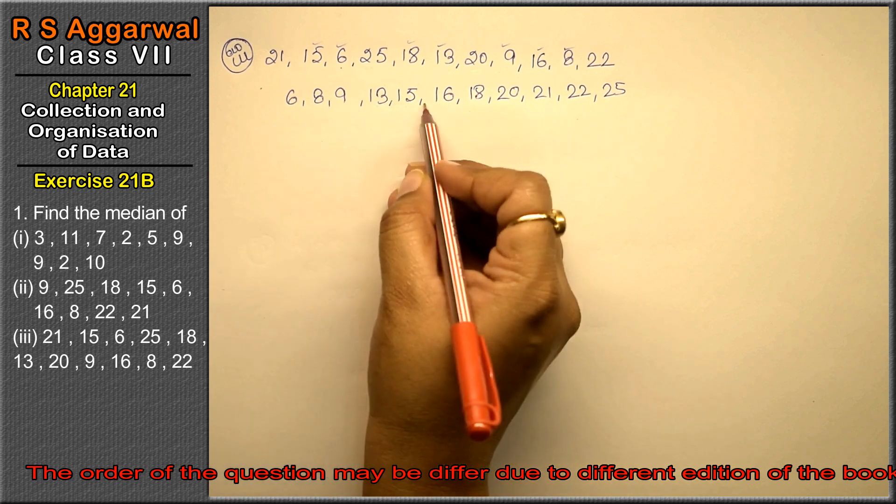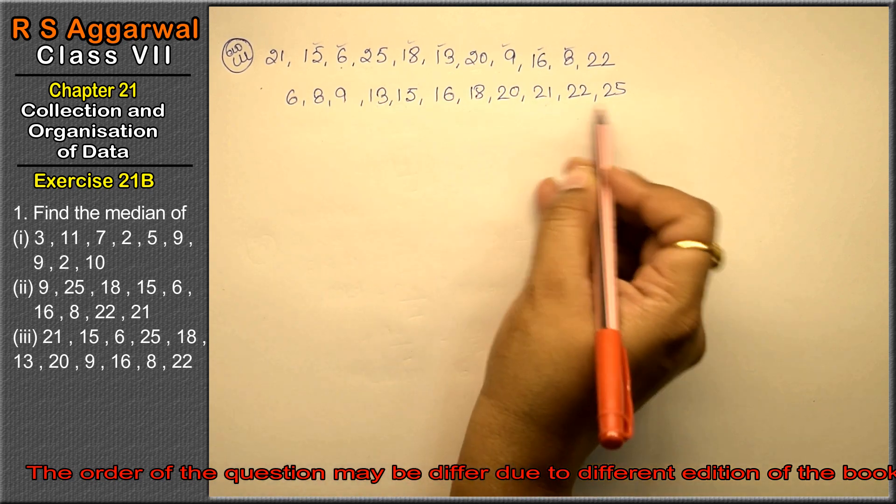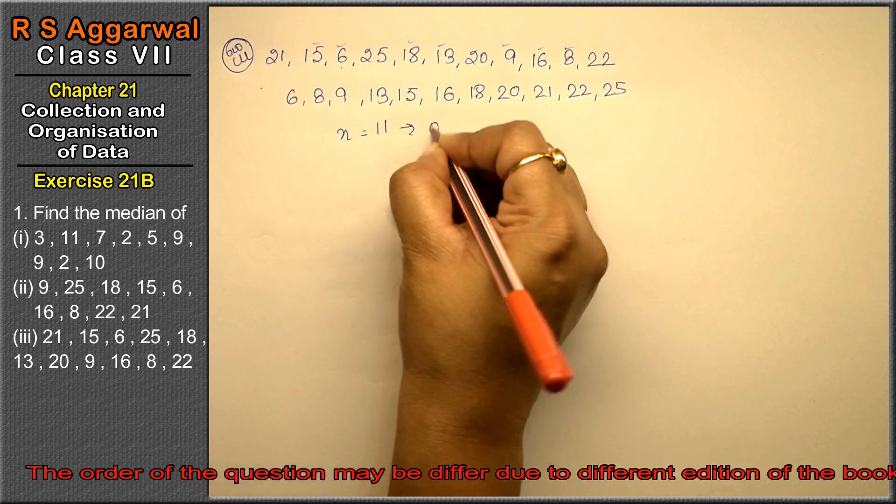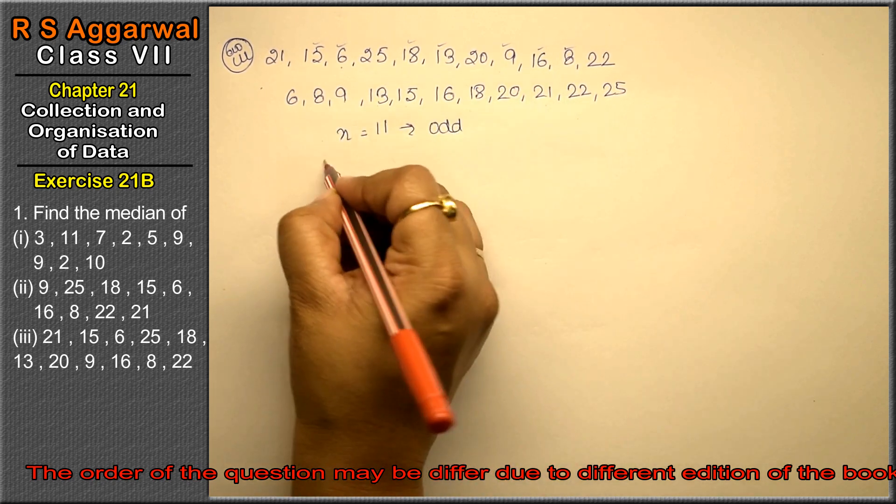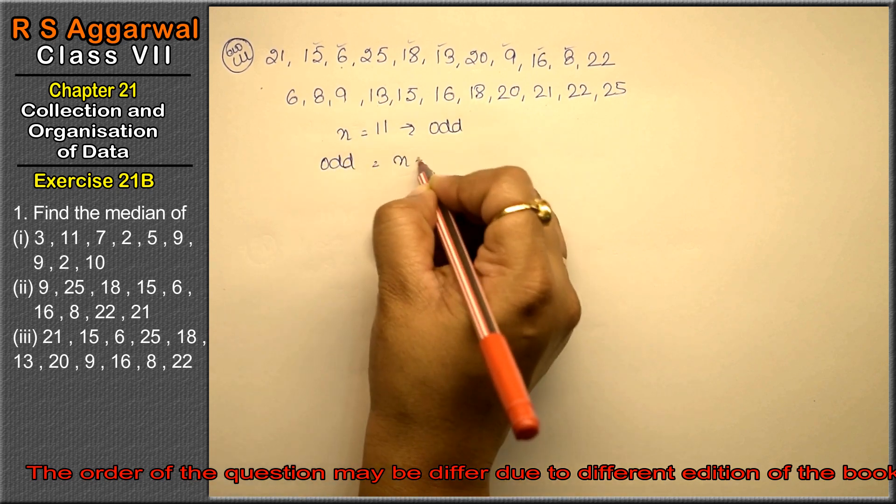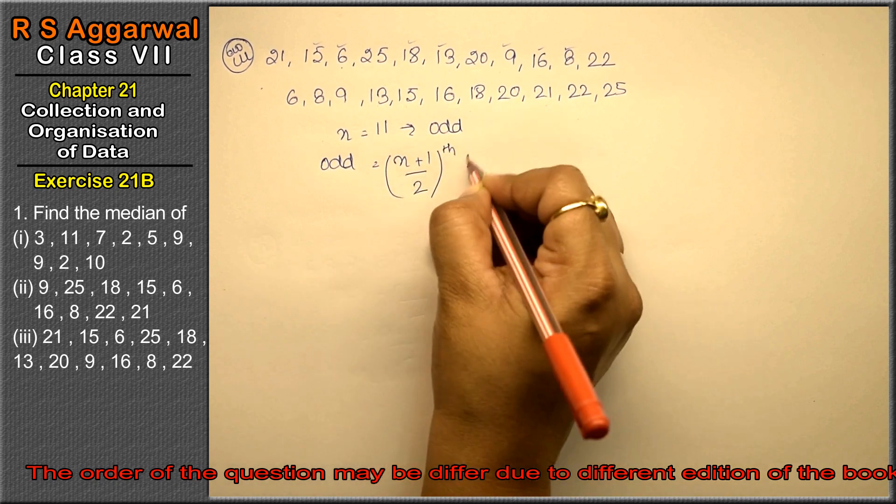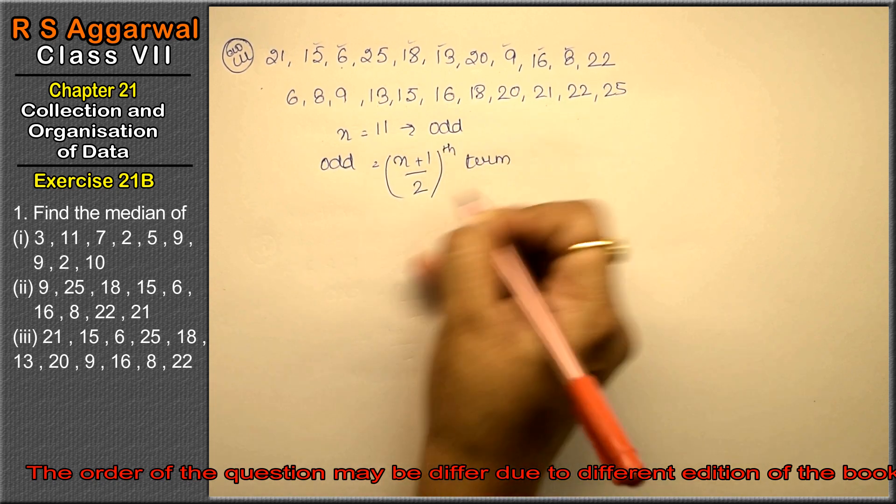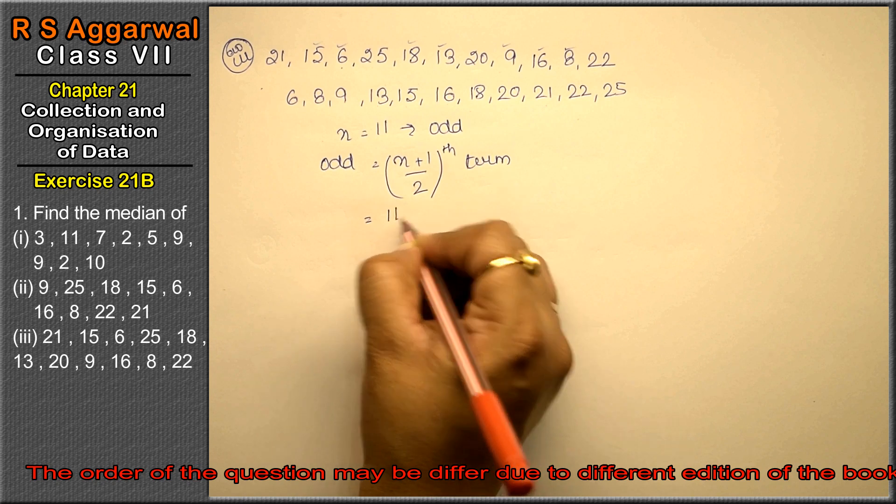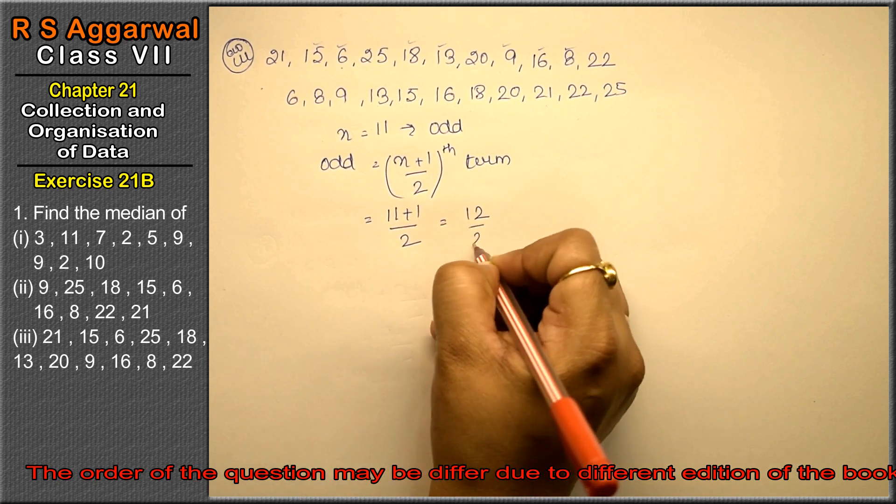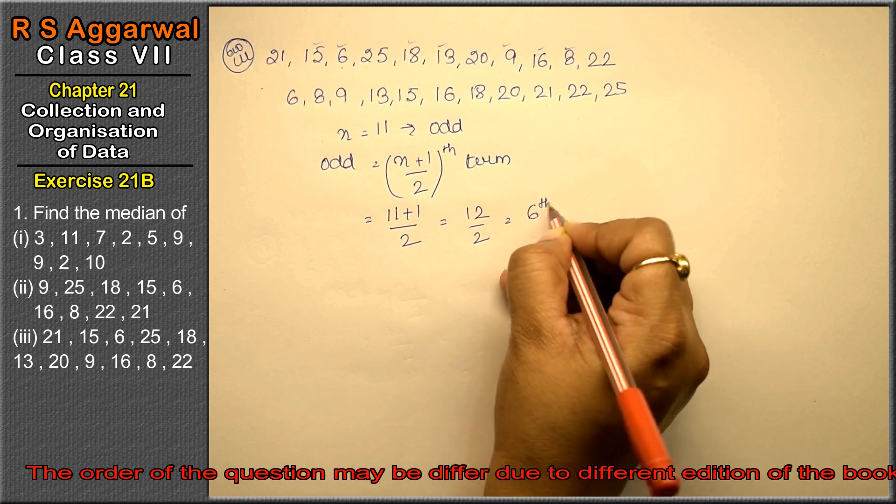See, 11 is what? 1, 2, 3, 4, 5, 6, 7, 8, 9, 10, 11. So n is 11. 11 number is also odd. In odd case, we do n plus 1 upon 2th term. That is 11 plus 1 upon 2, that is 12 upon 2, that is 6th term.